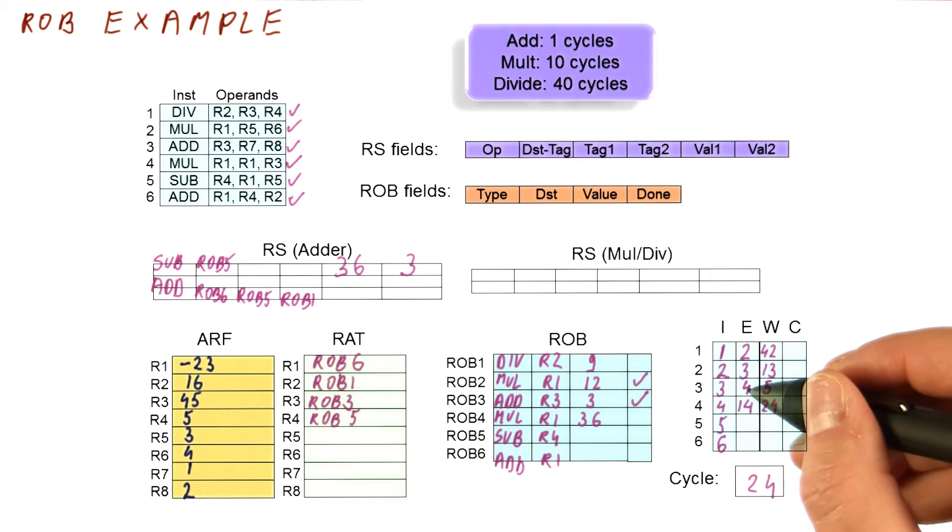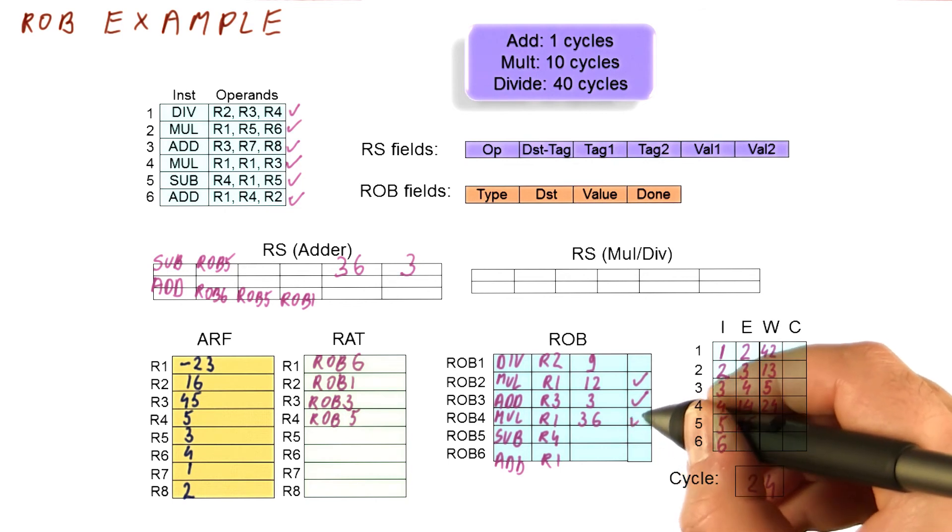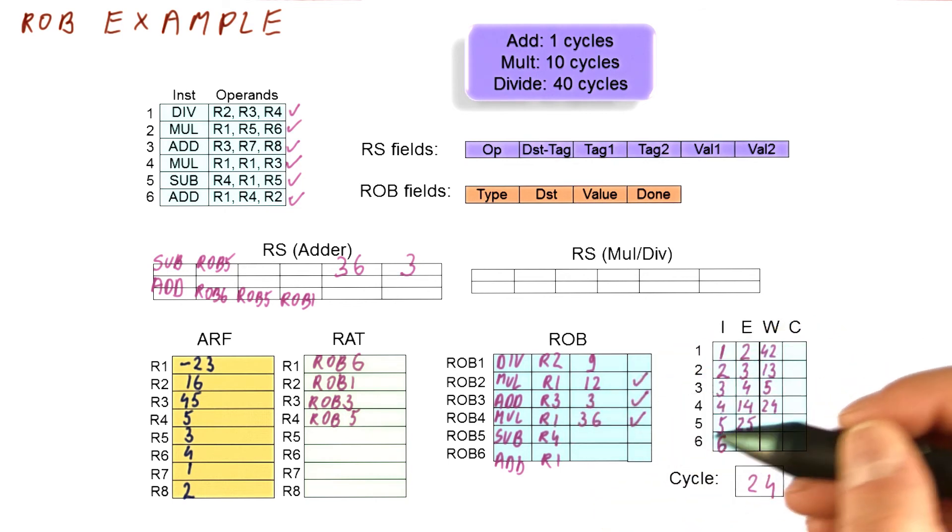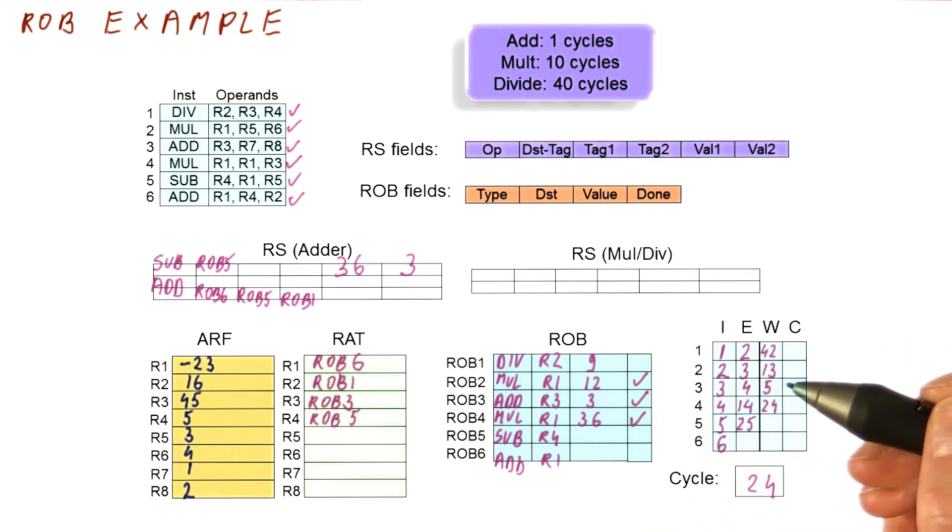So in cycle 25, the subtract is going to start executing. Meanwhile, our rob4 instruction gets marked as done. Basically, this value of 36 that was broadcast also gets deposited here and marked as done in the rob.